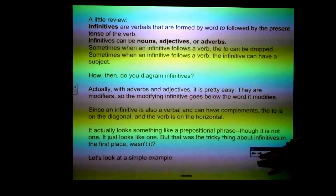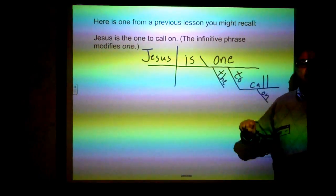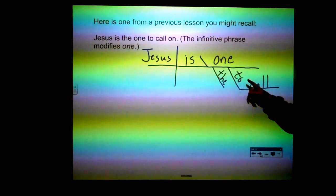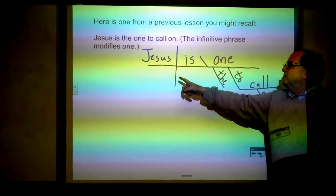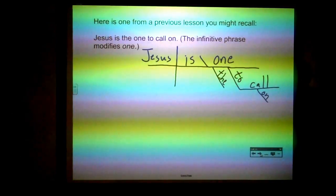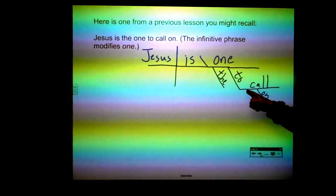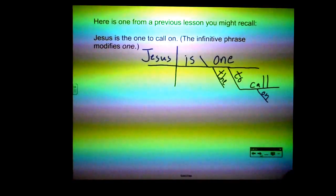Let's look at a simple example from a previous lesson: "Jesus is the one to call on." The infinitive phrase "to call on" modifies "one," which is the predicate nominative. "Is" is the verb, "Jesus" is the subject, "one" is the complement. On the diagram, you have the diagonal, "not" modifies "one," and "to call on" modifies "one." The "to" is on the diagonal, the verb "call" is on the horizontal, and "on" modifies "call."